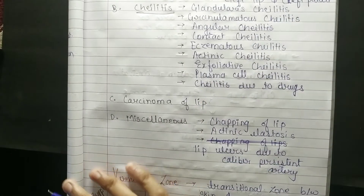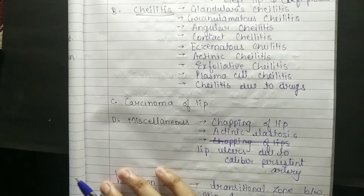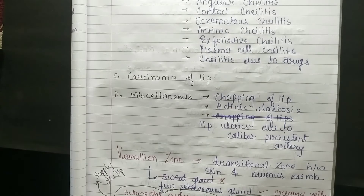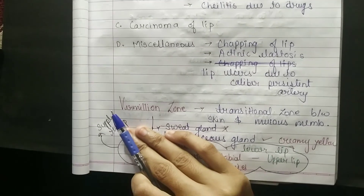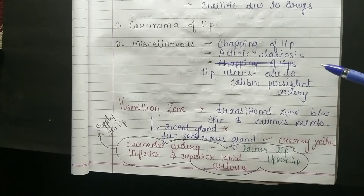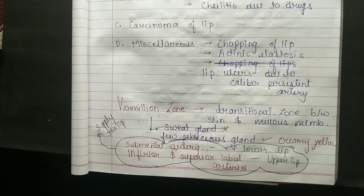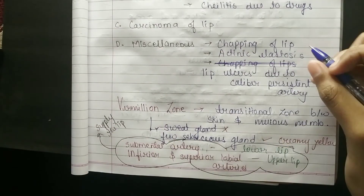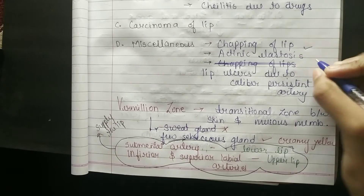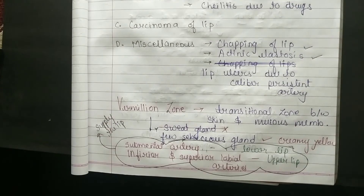Don't worry about the names, we will study them. Then there is carcinoma of the lip, which we will not cover right now — we will cover it when we study tumours. Then there are some miscellaneous things: based on your NEET MDS you have to know about actinic elastosis and lip ulcer due to caliber-persistent artery.